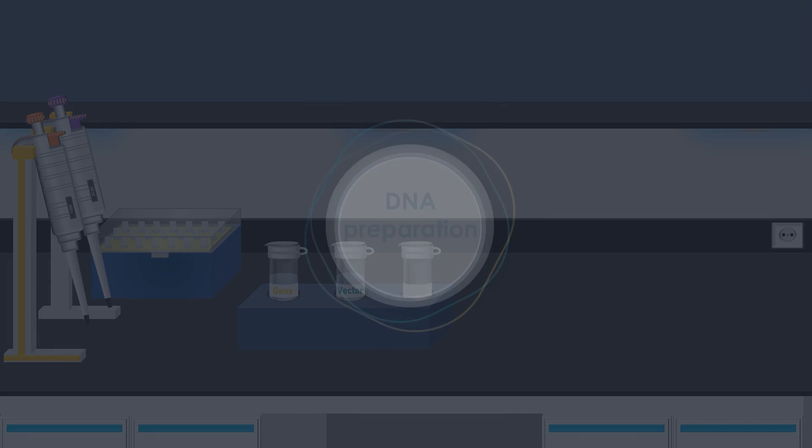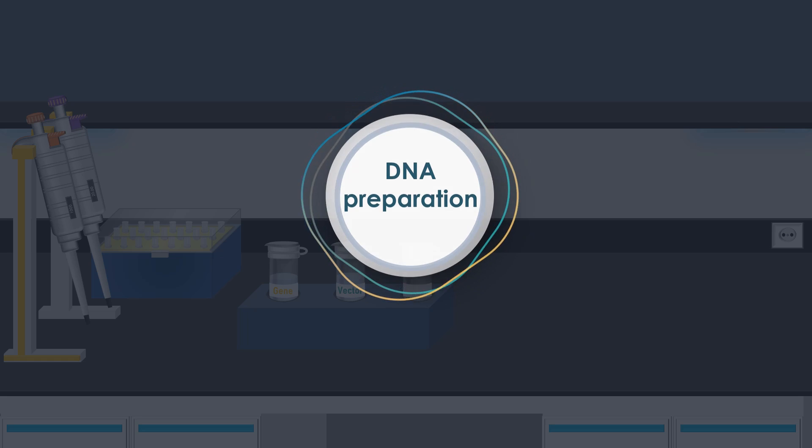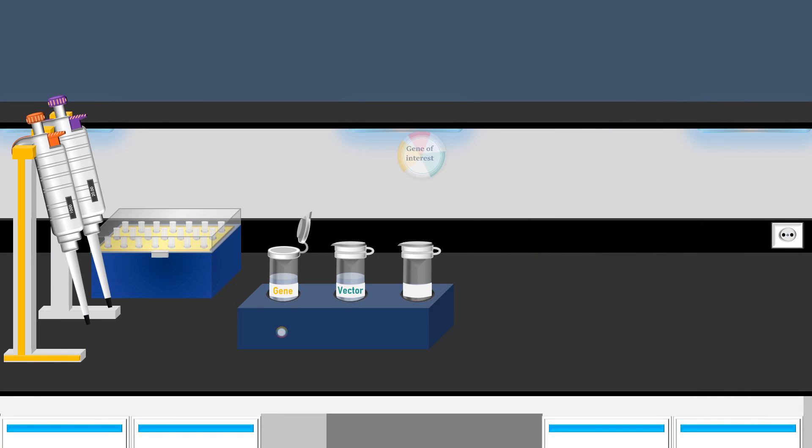The initial stage of recombinant technology involves DNA preparation. During this phase, we select the gene of interest, ensuring it aligns with the production of our desired protein, insulin, for example.